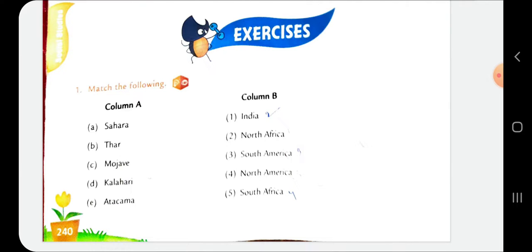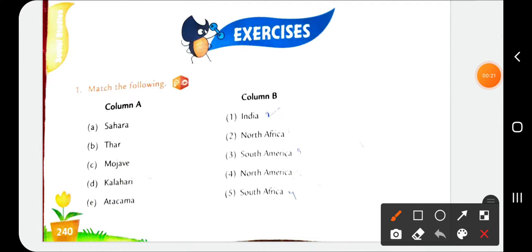Column A. Sahara. The important deserts of the world are the following, given in the textbook page number 236.